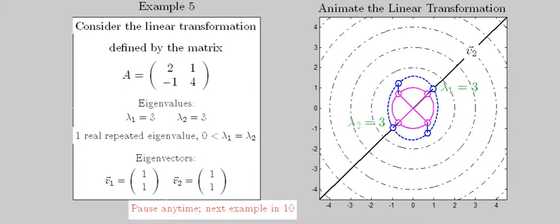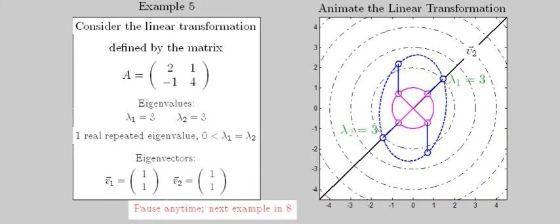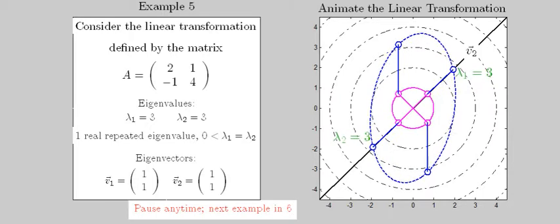This example exhibits a real, repeated eigenvalue, and thus has only one line of eigenvectors instead of two.